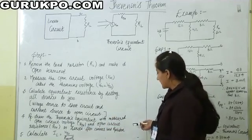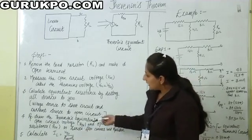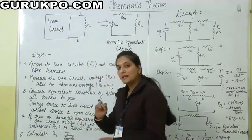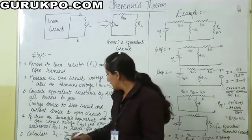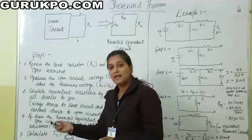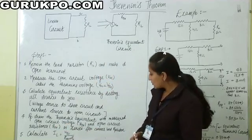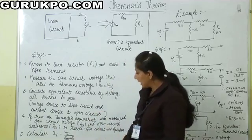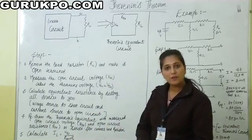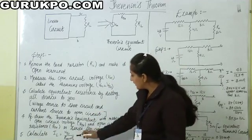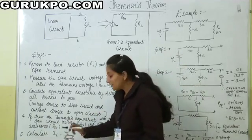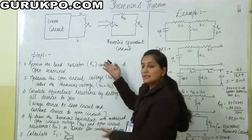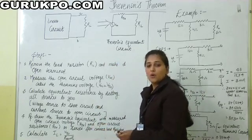Also connect the load resistance. Our last step, Step 5: calculate load current IL. IL equals Thevenin's voltage VTH divided by RTH plus RL — that means Thevenin's resistance plus load resistance. These are the steps.